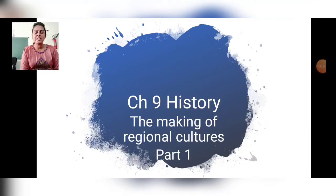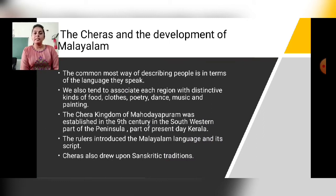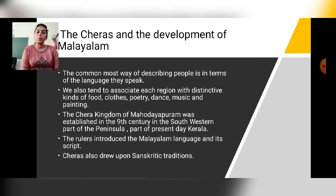Good morning students, welcome back. Today we will see Chapter Number Nine from History — The Making of Regional Cultures. We are going to see Part One. The topics are: the Cheras and the development of Malayalam — the Chera kingdom, one of the existing kingdoms in the southern part of India — as well as the growth and development of Malayalam as a language.